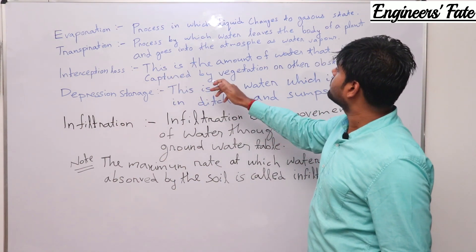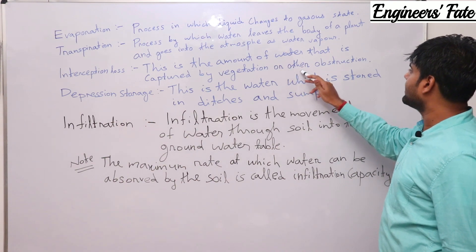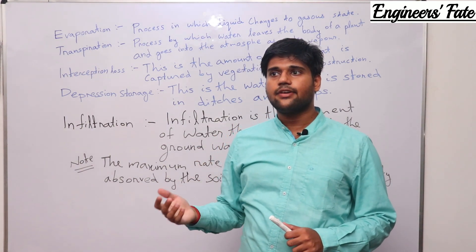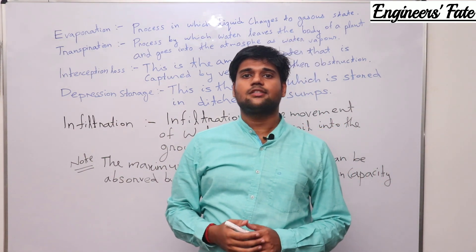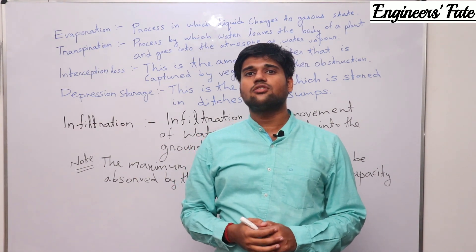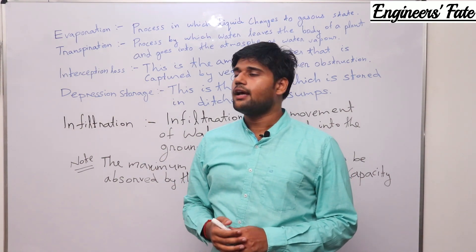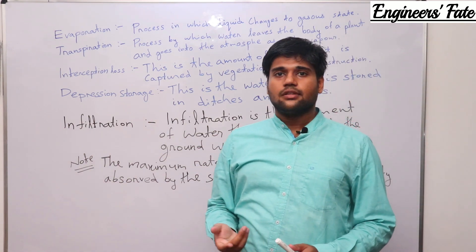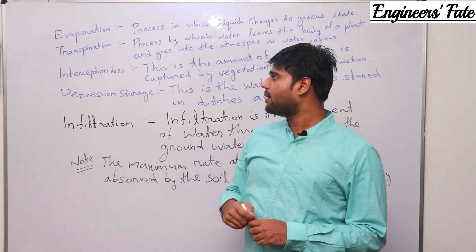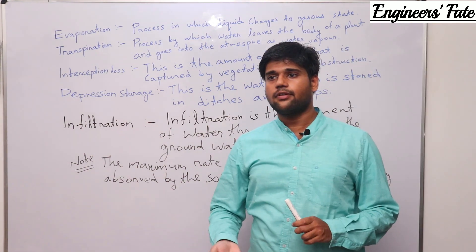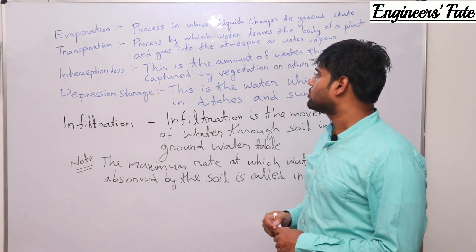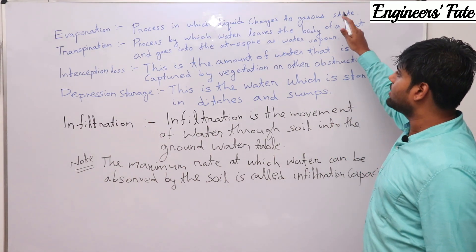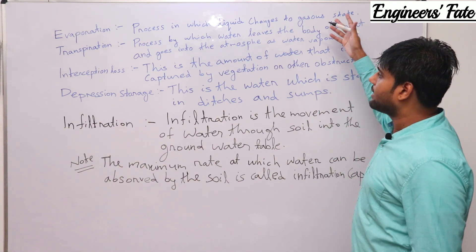Next is interception loss — this is the amount of water that is captured by vegetation or other obstructions. The elevation of trees and houses is generally more than the elevation of the normal ground surface, so rainwater strikes the trees and your house first. That house is an obstruction, and some amount of water is lost — that loss is known as interception loss. Next, depression storage: the ground is not completely horizontal; there may be some ditches. Some water is stored in those ditches, and that storage is known as depression storage.